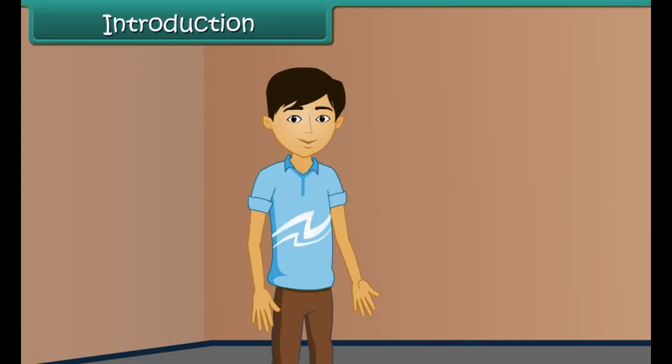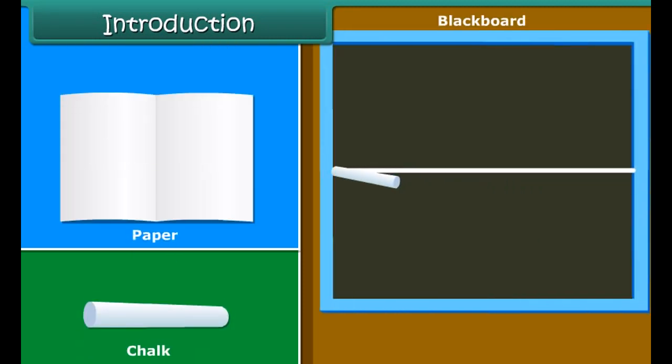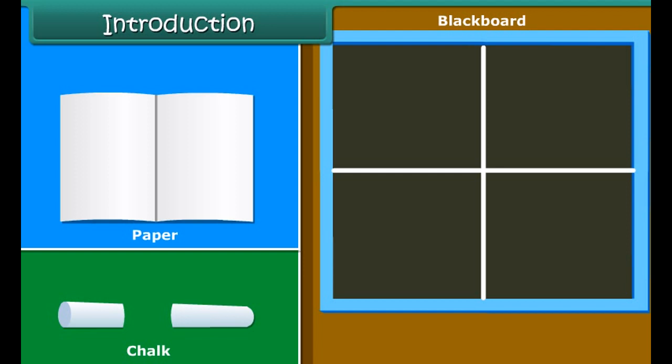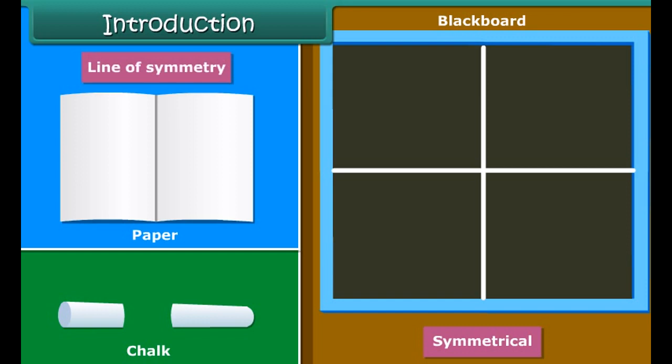Hello children, you may have found that on folding or cutting some objects like a blackboard, chalk, or paper along a particular line, we get two identical halves. These objects are called symmetrical, and the line along which the object is folded is called the line of symmetry. Today let us learn more about symmetry.